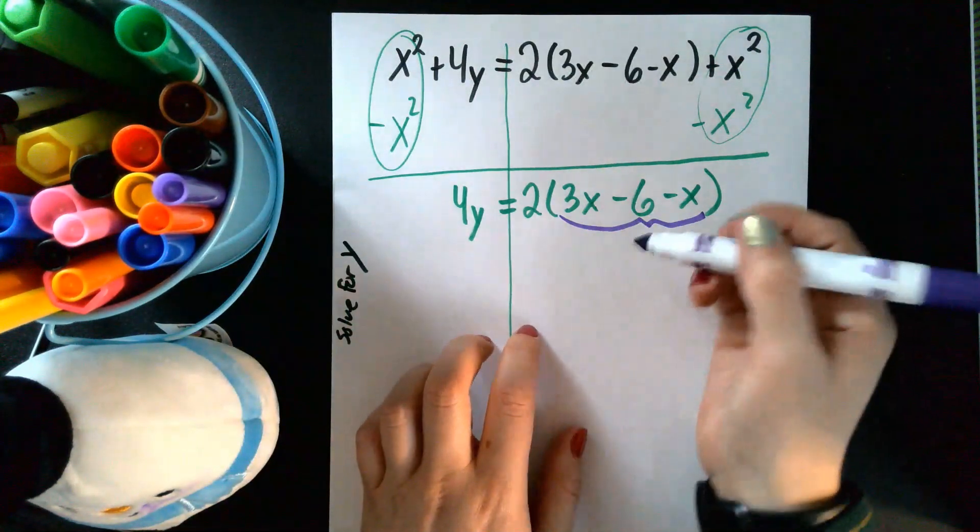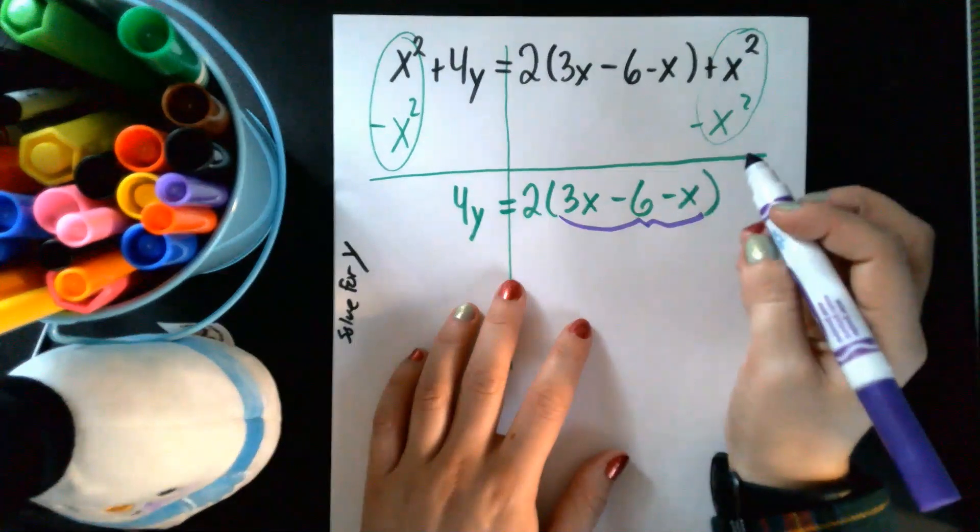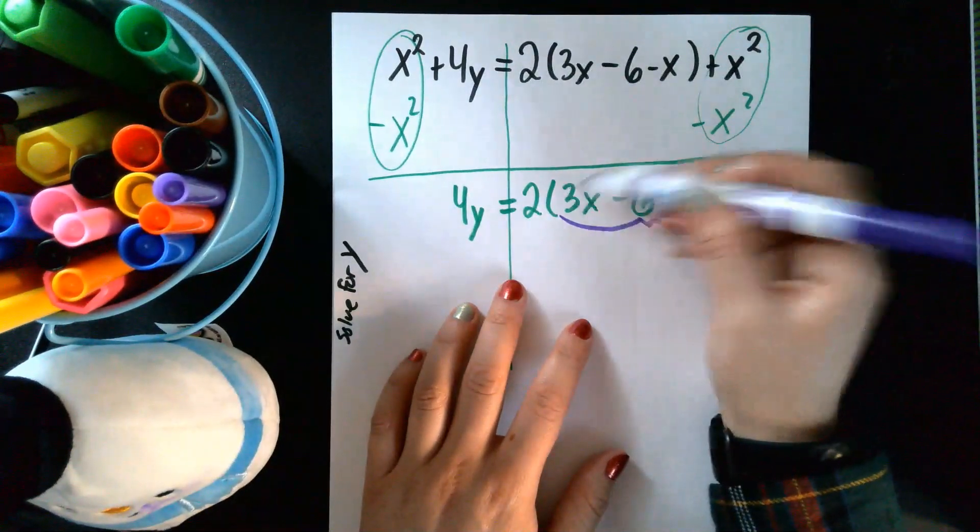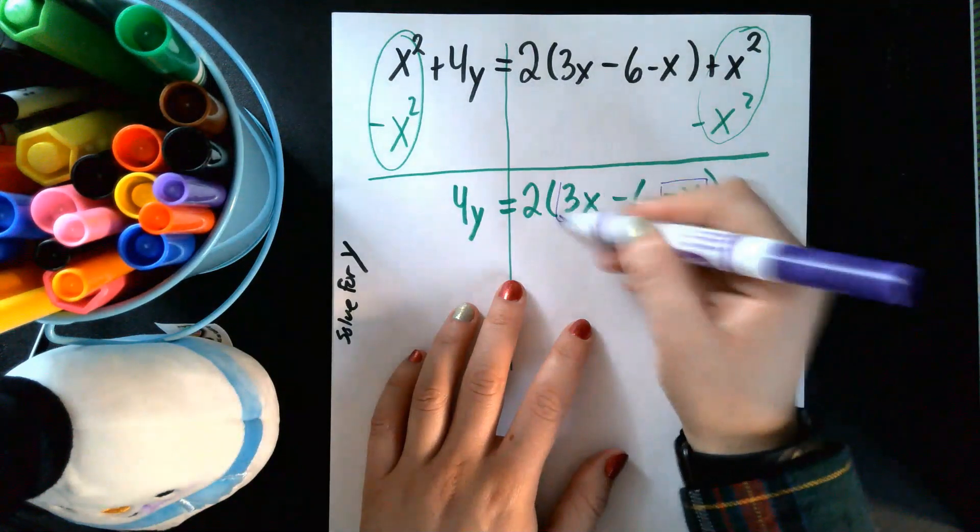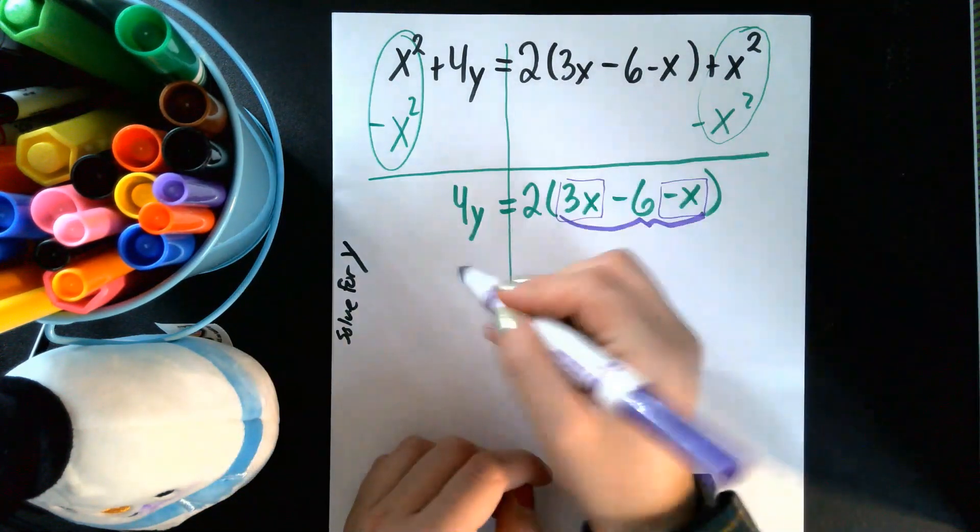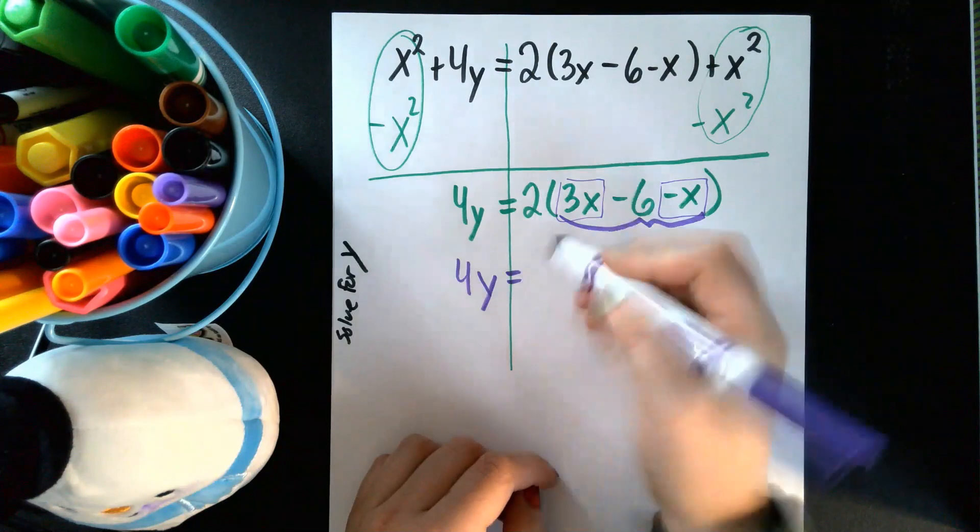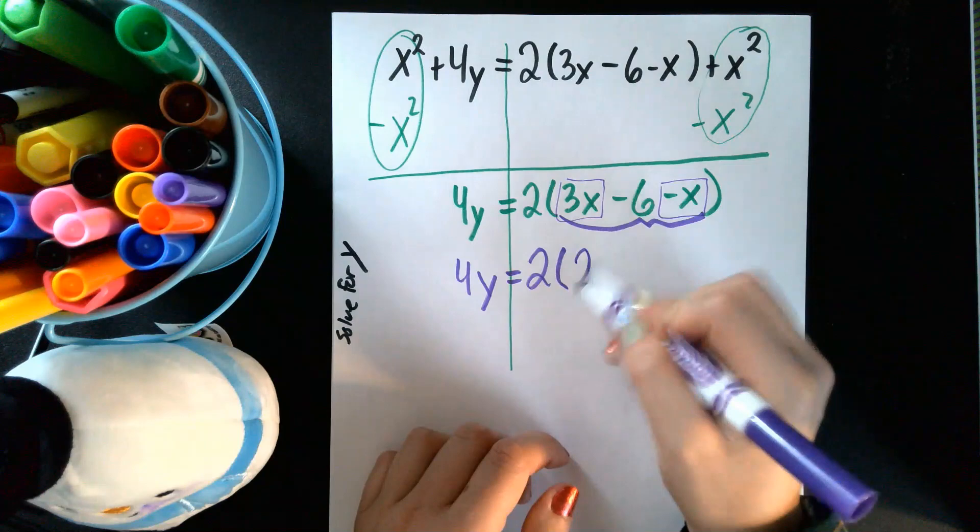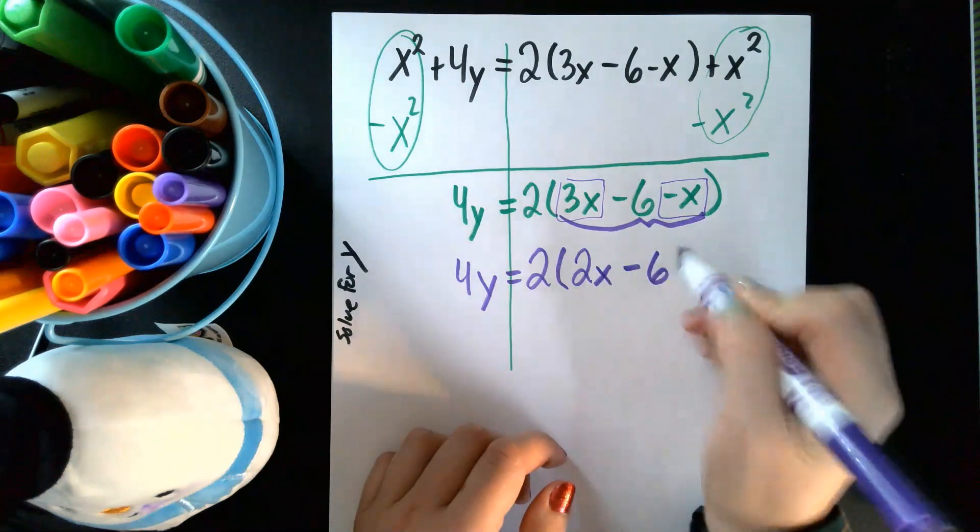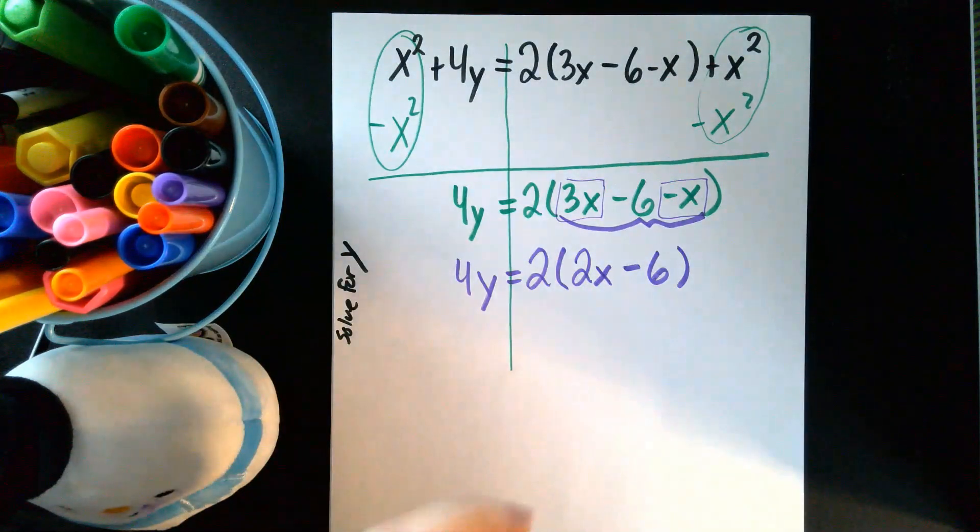So what I have here is I have a negative X and then three positive X's. So if I simplify the inside, so the two on the outside, but I'll have three X minus X which leaves me with just two X minus six remaining. Let's do red for the next part, color code this.